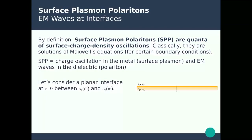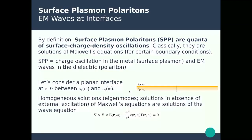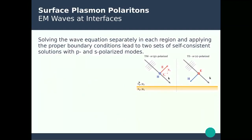Let's first consider a planar interface between two media, epsilon 1 and epsilon 2. We can solve Maxwell's equations and calculate their homogeneous solutions with just the eigenmodes — in other words, the solutions in the absence of external excitation. Those solutions are also solutions of the wave equations. If you solve those wave equations separately in medium 1 and medium 2 and apply the proper boundary conditions at the interface, you end up with two different sets of solutions.